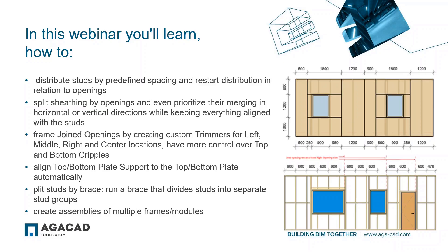In this webinar, you will see how to distribute studs by predefined spacing and restart the distribution in relation to openings, split the sheeting by openings vertically and horizontally, and prioritize the merging in vertical or horizontal directions. You'll also see how to frame joint openings by creating custom trimmers for left, middle, right, and center locations, and have more control over top and bottom cripples. Additionally, you'll see how to align top or bottom plates, add plate supports, split by brace, and create assemblies of multiple frames or modules.